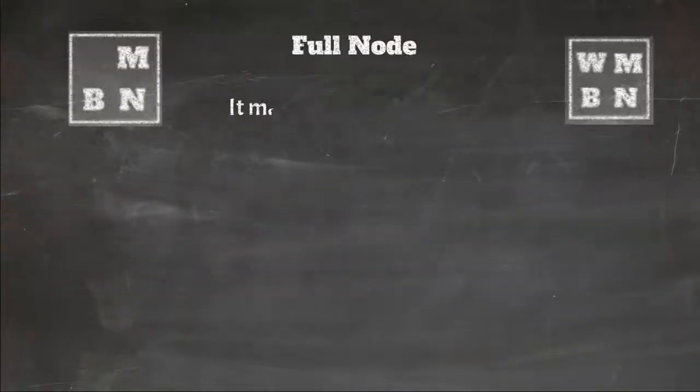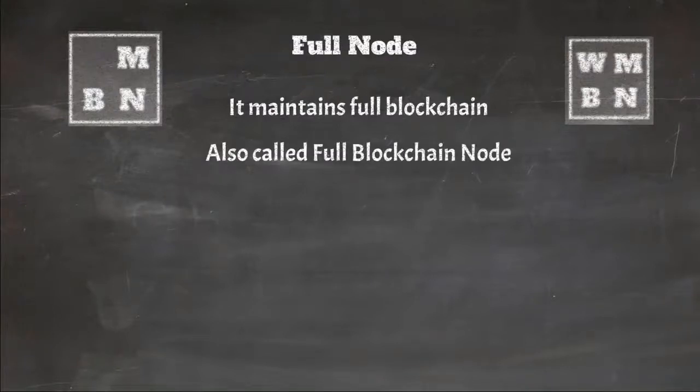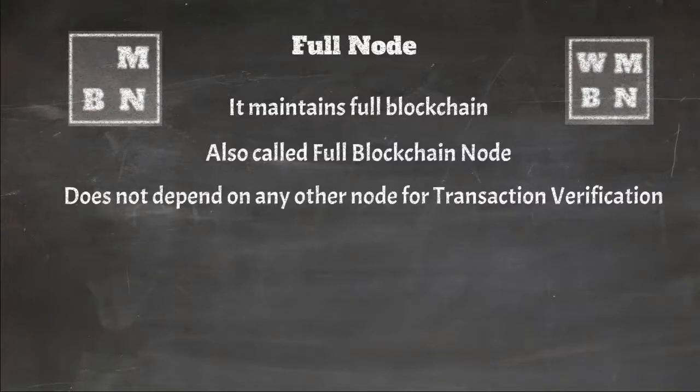So as you can see a full node which means a node which maintains full blockchain has to sync their blocks every time. In fact it's better to call full node as full blockchain node because full node means a node having full blockchain. The advantage of having full blockchain is that it does not depend on any node to verify its transaction.